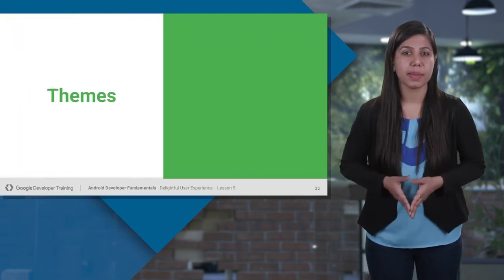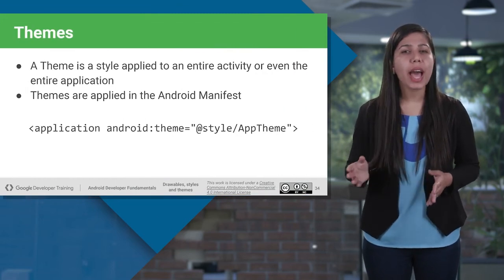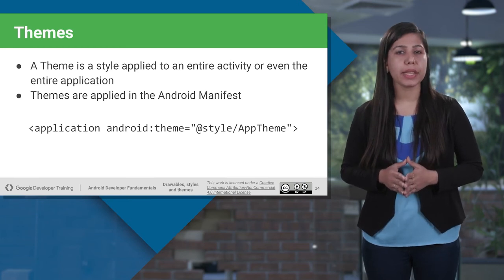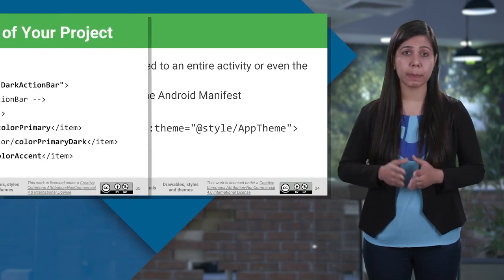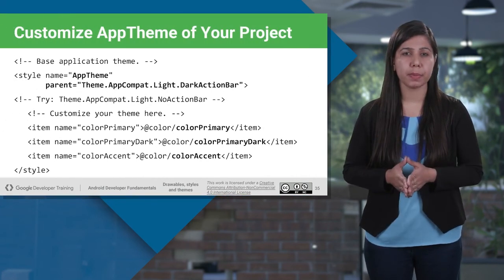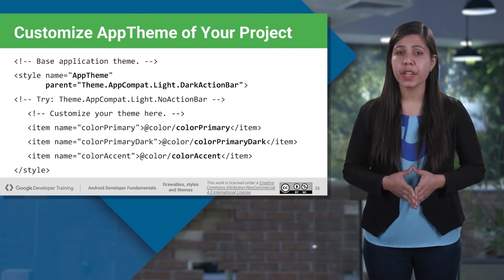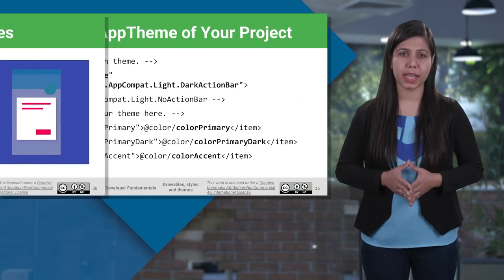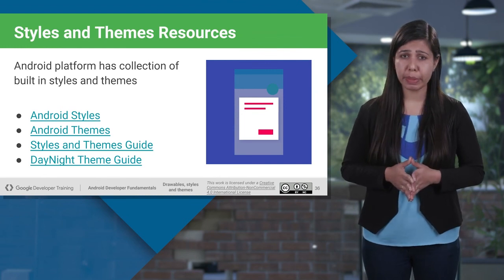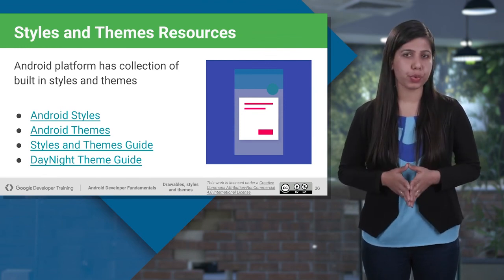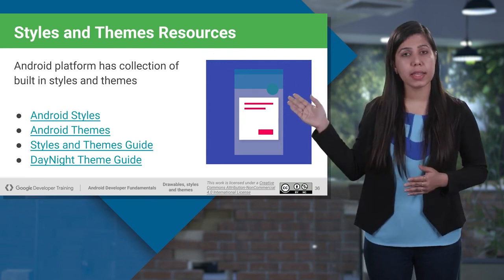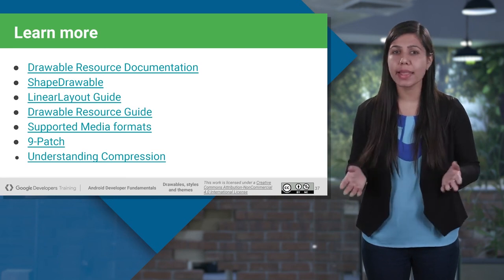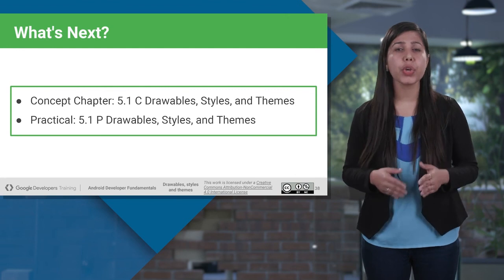A theme is a style applied to an entire activity or even your entire application. Themes are applied in the Android manifest. By default, the application references the Android-provided theme named AppTheme. Android provides templates for dark shades, light shades, and so on. We can inherit and expand these themes by referencing them in our theme's parent attribute. The Android platform provides a large collection of built-in styles and themes — you can find a reference for all available styles in the provided links.